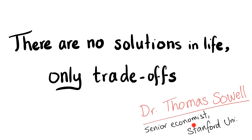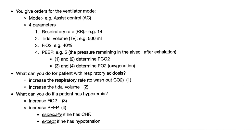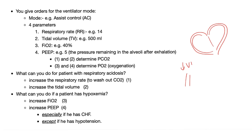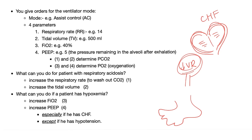There are no solutions in life, only trade-offs. In a patient with CHF, the heart is overwhelmed. Increasing PEEP decreases venous return — which is actually beneficial in CHF because you don't want to push more blood onto a struggling heart. Decreasing venous return helps the heart, even if it causes ankle edema. However, too much PEEP is bad if the patient has hypotension. Therefore, always check vital signs before ordering PEEP.